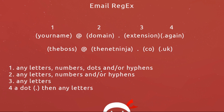The first part — your name — can be any letters, numbers, dots, and/or hyphens. So it could be something like 'donna.peters@something.com' or 'donna-peters@something.com'. The second part, the domain, can be any letters, numbers, and/or hyphens — so 'at the net ninja' or 'at the net-ninja'. The third main part, the extension, can only be letters — no numbers or symbols. Just letters: 'dot com', 'dot org', 'dot net', 'dot co', 'dot uk'.